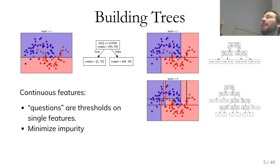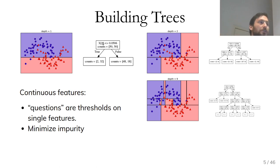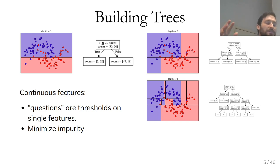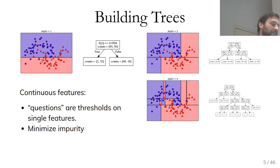Here a threshold on the y-axis, x1 ≤ 0.0596, is found to be the most informative. The background is colored according to the most likely decision. In the tree visualization, the root node corresponds to all samples, which are split into a top part and a bottom part. The bottom part has 2 blue and 32 red samples, so it's colored red; the top part has 48 blue and 18 red samples, colored light blue.